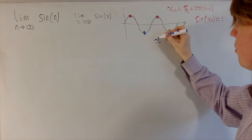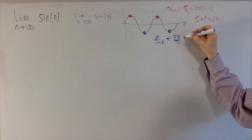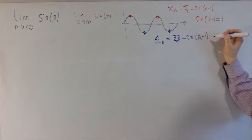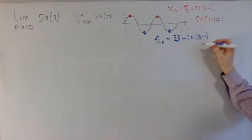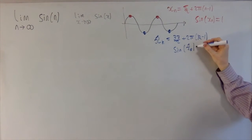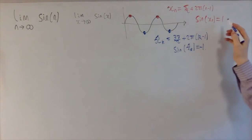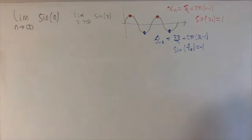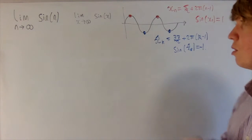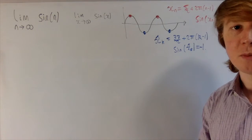You can find a nice subsequence where it's always equal to minus 1. If I call this x̂_k, I've got 3pi over 2 plus 2pi times (k minus 1), and then sine of x̂_k is always equal to minus 1. So you've got a subsequence along which you're always equal to 1, and one along which you're always equal to minus 1, so actually this is quite nice and straightforward. There's no way this limit can exist because you're always oscillating between positive and negative 1 and all the values in between.